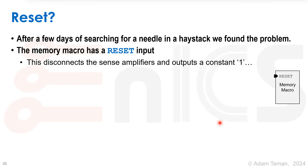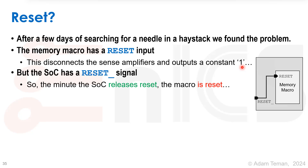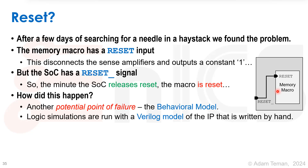After a few days of searching for a needle in a haystack, we actually found the problem. The memory macro has a reset input. Why does a memory macro have a reset input? We put it in there to disconnect the sense amplifiers during reset, and when we do that the memory outputs a constant one — which looks exactly like what we were reading out from the chip. But why would we be giving it a reset? Because the SoC has a reset_n signal, meaning it's active low. So when we release reset we're actually raising it, and the memory is getting reset, meaning we are constantly in reset whenever the SoC is working.